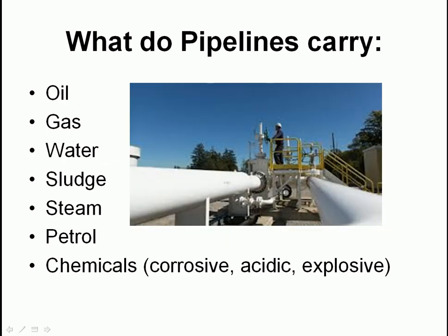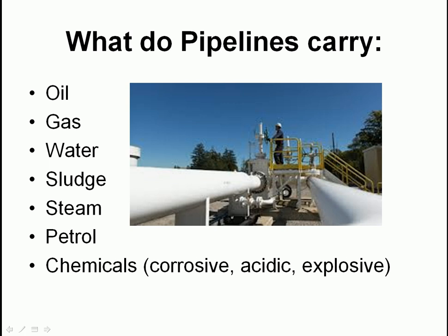What do pipelines carry? We've got oil, gas, water, sludge, steam, petrol, and chemicals. Straight away we've got a problem - some chemicals can be corrosive, acidic, or explosive. We have to deal with that. If you've got a pipeline carrying corrosive or acidic material, we might have a coating inside the pipeline to protect it and increase its lifespan.